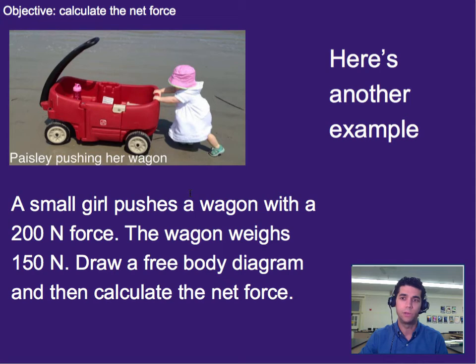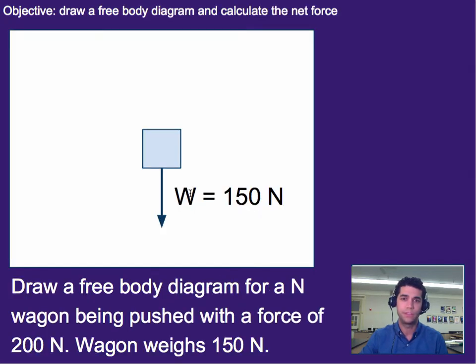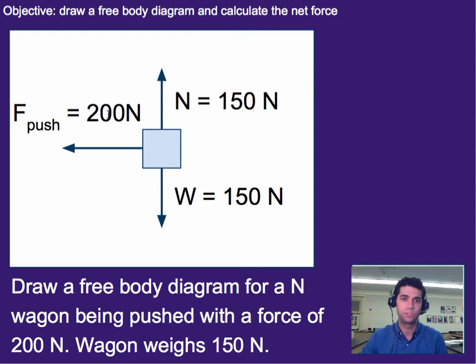All right, hopefully you paused and welcome back. So let's go through this. First of all, we know that there is weight pulling down on this wagon. Notice we're focusing on the forces on the wagon, not on anything else. We also know that since the wagon isn't sinking into the ground or rising up like on an elevator, that the normal force or force from the surface of the ground is going to be equal to our weight and cancelled out. Last but not least, we know the little girl is pushing on the wagon. So there's 200 newtons of force going to the left from her push.